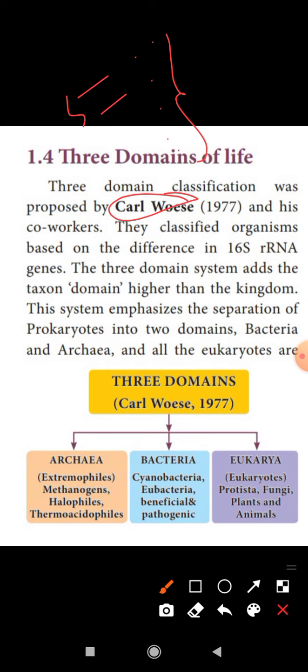The first domain is Archaea. This domain includes mostly single-celled, unicellular organisms. Archaea also belong to prokaryotic organisms. These organisms live in extreme environmental conditions, a property called extremophilia — they are called extremophiles.